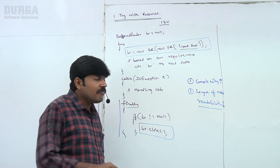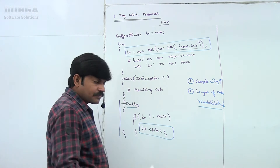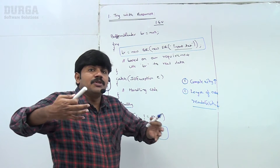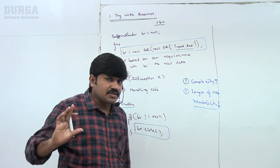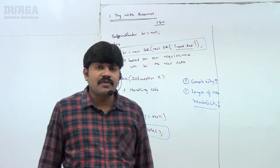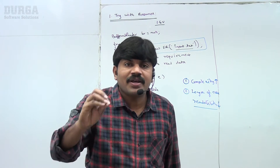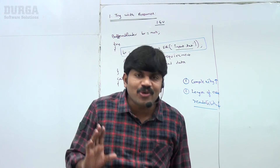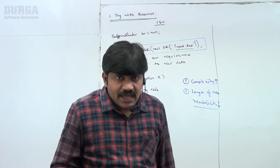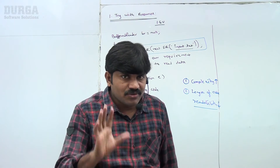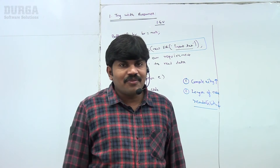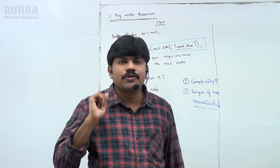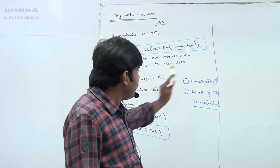To overcome these problems, in the 1.7 version the try-with-resources concept came. Now let me show the same example with try-with-resources so you can see how much benefit we get from this new feature. The biggest advantage of try-with-resources is: whatever resources we open in the try block, we are not required to close them explicitly — automatically the resources will be closed. We are not required to write the finally block, so complexity of programming is going to be reduced and length of code is going to be reduced.